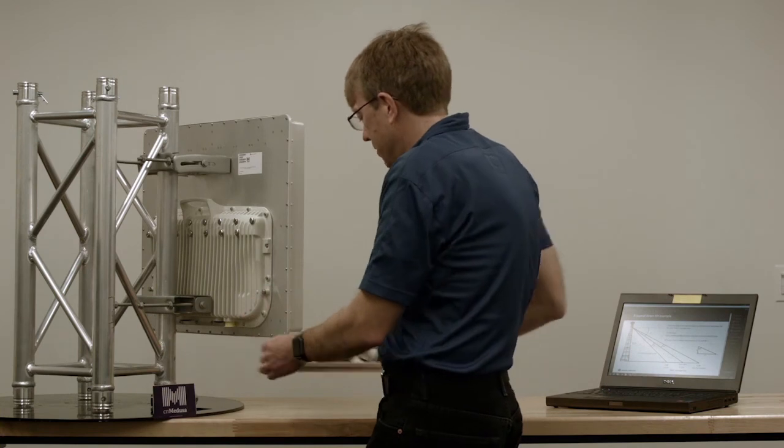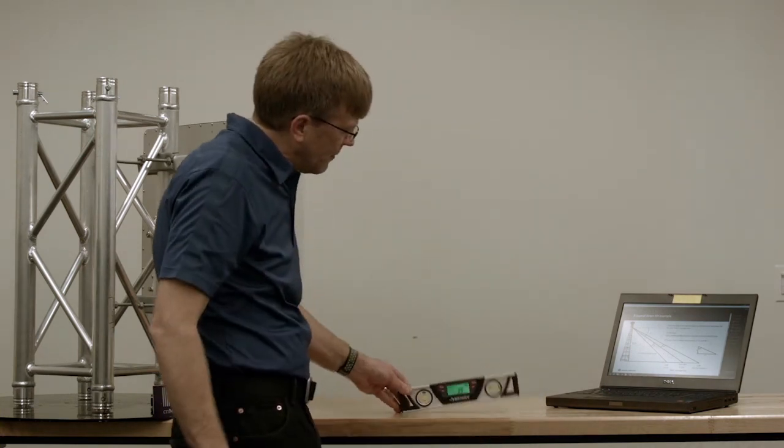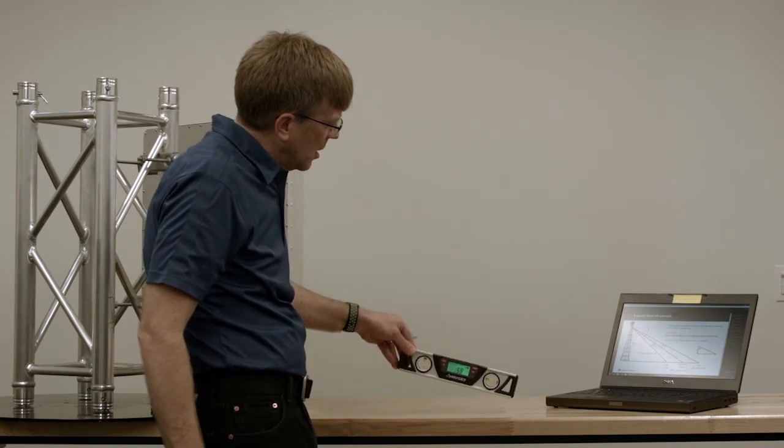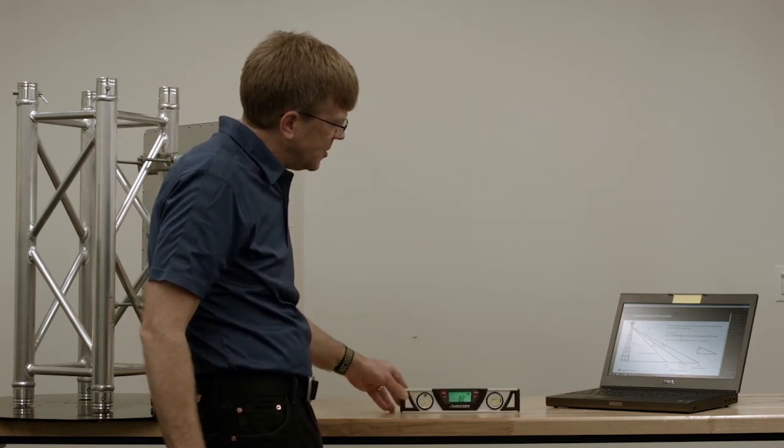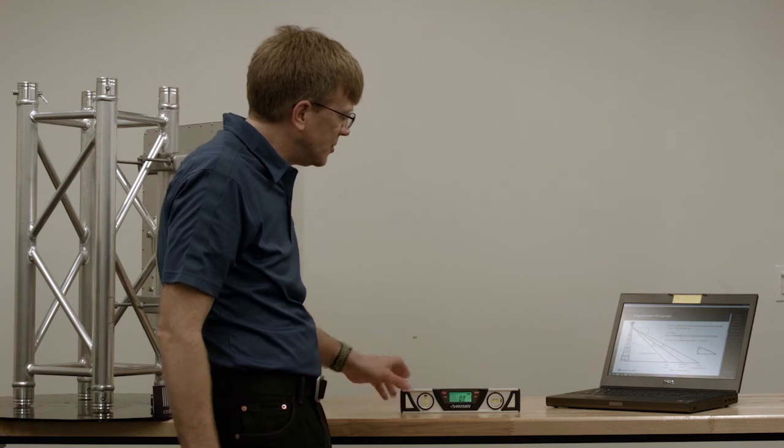So today we've talked about digital levels and trying to understand what the level is telling you. And the whole idea is to get the right down tilt on your access point so that you can obtain optimum coverage. And again, you don't have to climb back up the tower to adjust it.